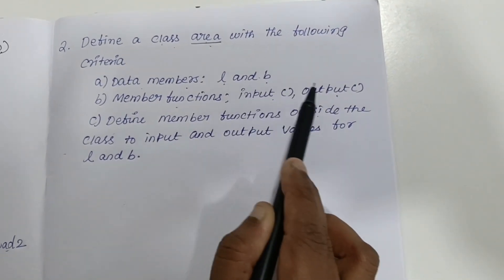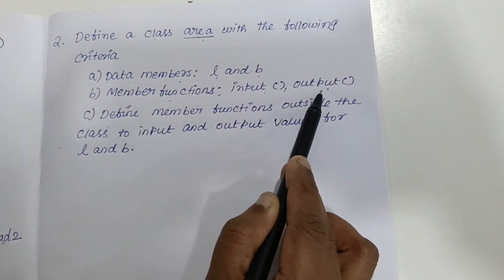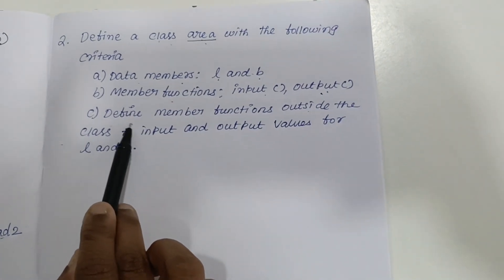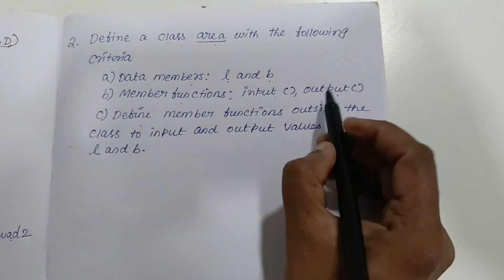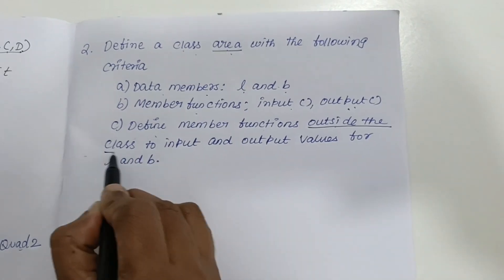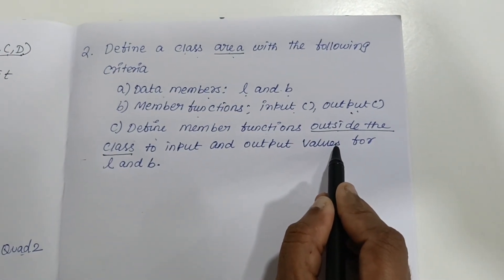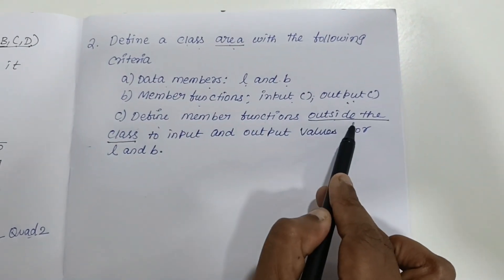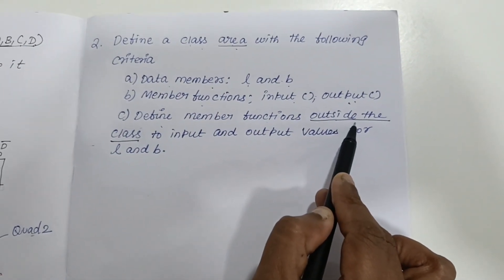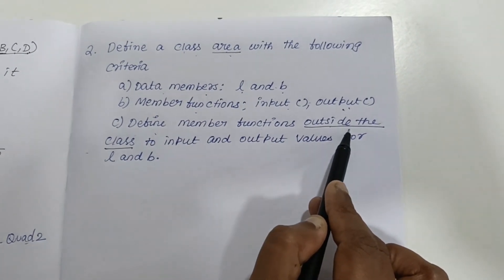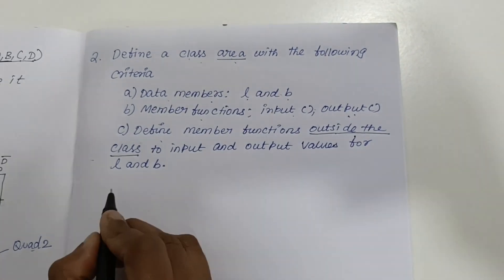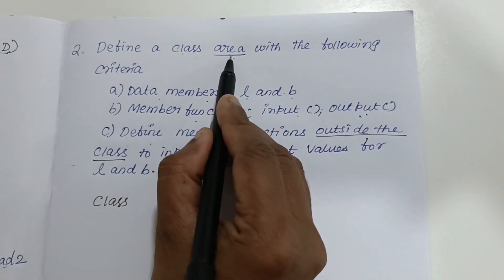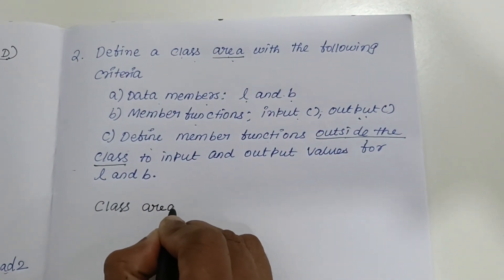You are supposed to write the same data member and member function names — you should not change them. The third important keyword is that the program must be written with member functions outside the class. Make a note of these keywords when reading the question paper. Now we are going to write the program. You create a class using the class keyword, and the class name is 'area'.